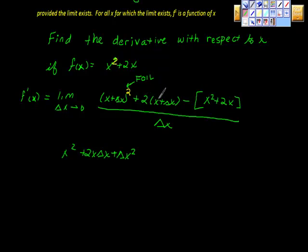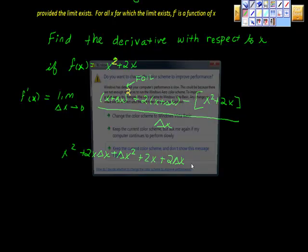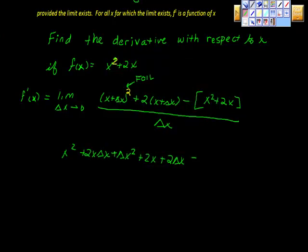Now we'll distribute this to this, and we'll get plus 2x plus 2Δx. We're going to distribute this negative sign. Negative times a positive is a negative. Negative times a positive is a negative. So we get minus x² minus 2x.